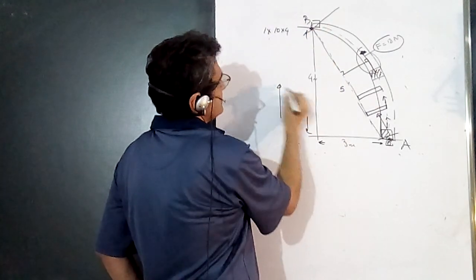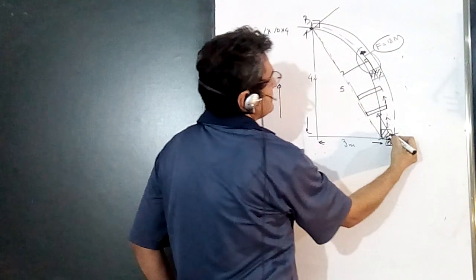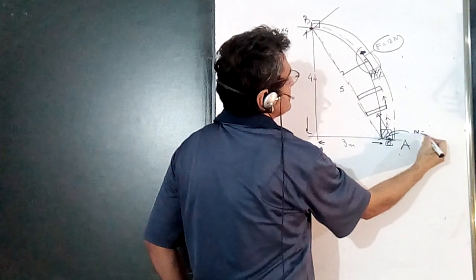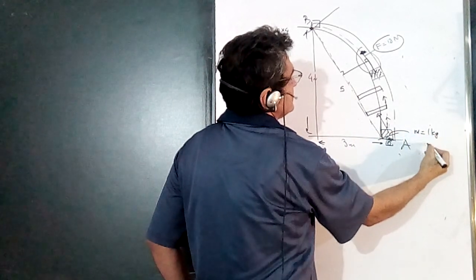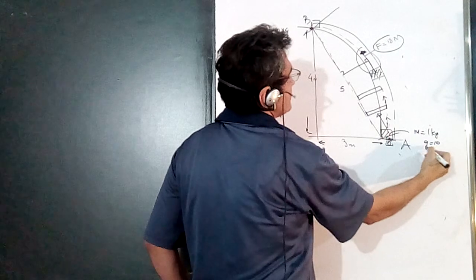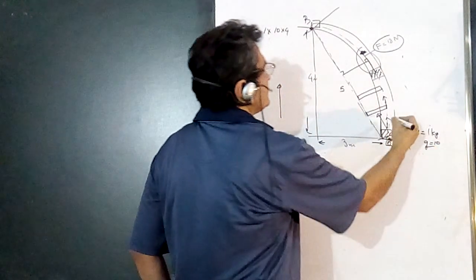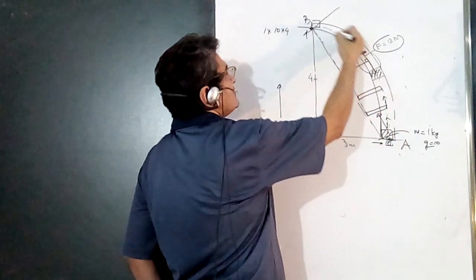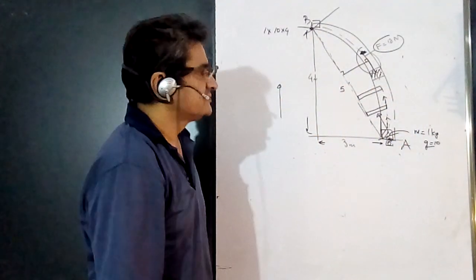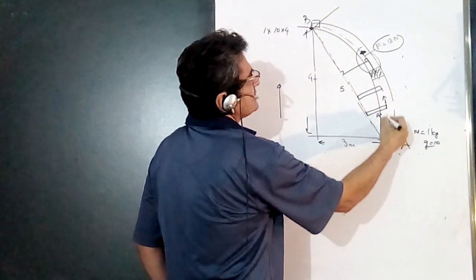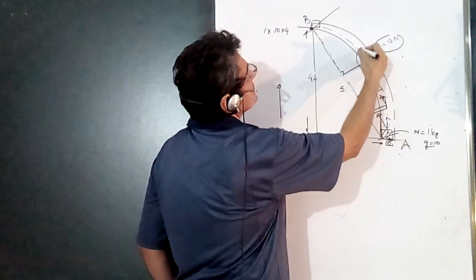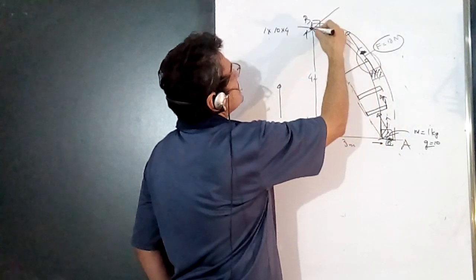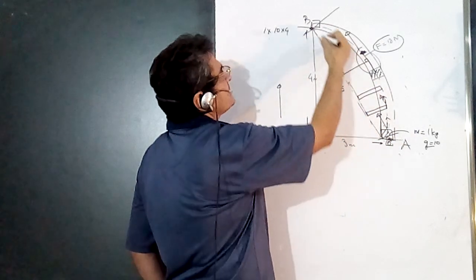It is in a vertical plane. The mass of particle m is equal to 1 kg and g is given as 10 in the problem. A force acts on this mass while it is being taken along the elliptical orbit in such a way that the force is always parallel to the line joining A and B.